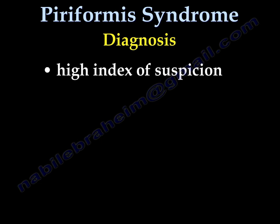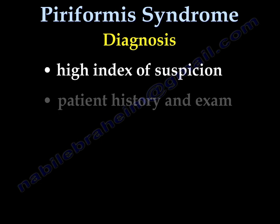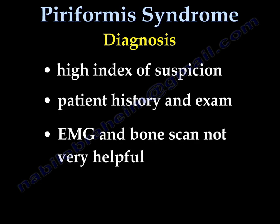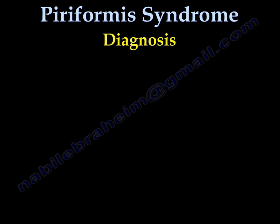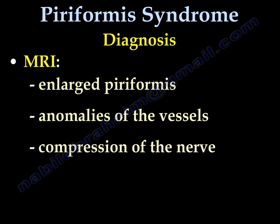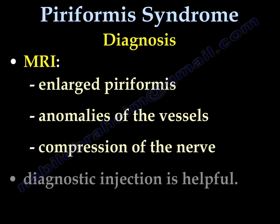Diagnosis requires a high index of suspicion; patient history and exam are important. EMG and bone scan are not very helpful. The MRI may show an enlarged piriformis, anomalies of the vessels, or compression of the sciatic nerve. Diagnostic injection is helpful.